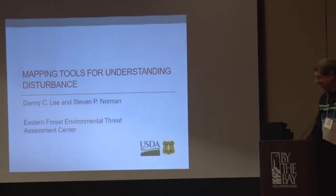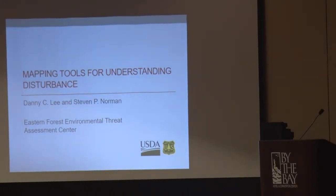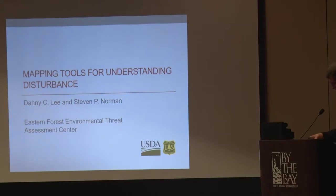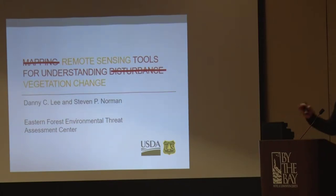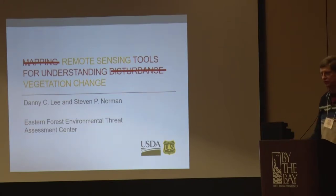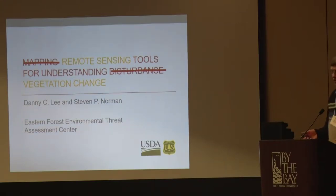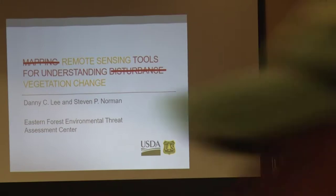The title we started out with was Mapping Tools for Understanding Disturbance. One of the first things I saw when I started looking at it was, I got the title wrong. I need to adjust some things. We don't have time to talk all about mapping, and some of the things I talk about are sort of outside the balance of disturbance. So let's change the title and talk about remote sensing for understanding vegetation change, which is more specific to what we're going to do.